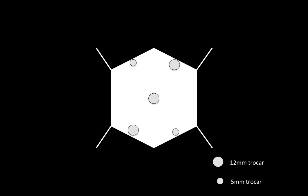Five ports were used in the operation, as shown in the diagram. A total of three 12 mm ports were positioned in the umbilical region, right iliac fossa, and left hypochondrium respectively. Two 5 mm ports were placed in the right hypochondrium and left iliac fossa.